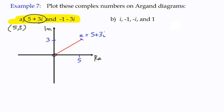The second number, negative 1 minus 3i: negative 1 is clearly a little distance to the left of the origin, and negative 3i is the same distance down as negative 3. So the complex number is at the intersection of those two points. The line helps draw our eye to where the numbers are — it helps to see relative distances and angles. In fact, the length of those lines and the angle they make is going to become really important in a little while. And that's how to plot a complex number on an Argand diagram.